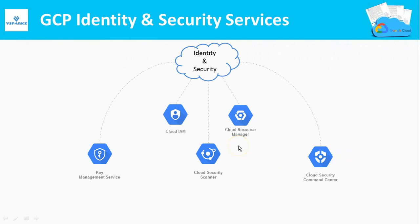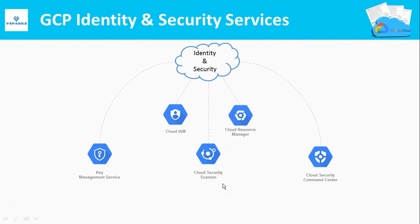Under Identity and Access Management, we have Cloud IAM and Resource Manager, where you manage your identities and permissions. Google Cloud KMS is a cloud-hosted key management service that lets you manage cryptographic keys for your cloud services — it deals mostly with encryption. Cloud Security Scanner is a web security scanner for common vulnerabilities in App Engine, Compute Engine, and Google Kubernetes Engine applications. Cloud Security Command Center enables you to understand your security and data attack surface by providing asset inventory, discovery, search, and management.